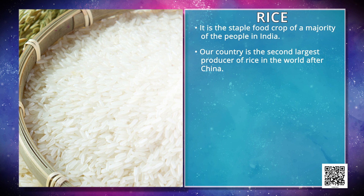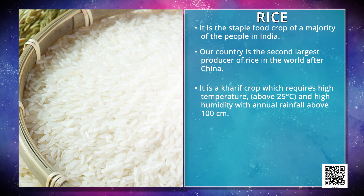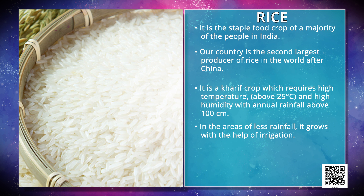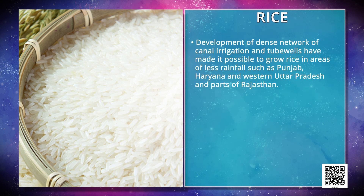Our country is the second largest producer of rice in the world after China. It is a Kharif crop which requires high temperature above 25 degrees Celsius and high humidity with annual rainfall above 100 cm. In the areas of less rainfall, it grows with the help of irrigation. Rice is grown in the plains of North and Northeastern India, coastal areas and the deltaic regions. Development of a dense network of canal irrigation and tube wells have made it possible to grow rice in areas of less rainfall such as Punjab, Haryana, western Uttar Pradesh and parts of Rajasthan.